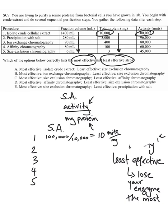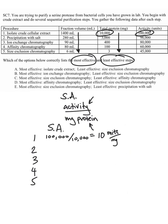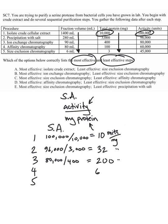After step two, you have 96,000 over 3,000, so your specific activity is 32 units per milligram. Then 80,000 divided by 400 gives a specific activity of 200. Then 60,000 divided by 100 gives 600 units per milligram. And lastly, 45,000 units divided by 3 gives 15,000 units per milligram.